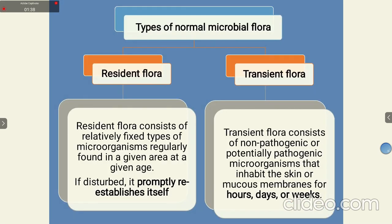There are two types of normal microflora: resident and transient. Resident flora consists of a fixed type of microorganisms regularly found in a given area at a given age. If they are disturbed, they will recolonize. Transient flora, under certain conditions, their population will be present and then disappear. They may last for hours, days, or weeks.